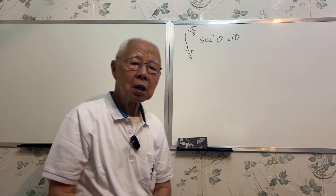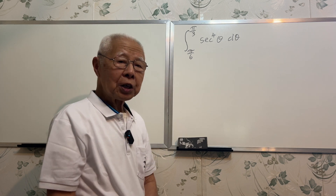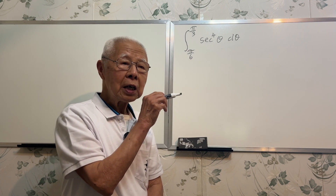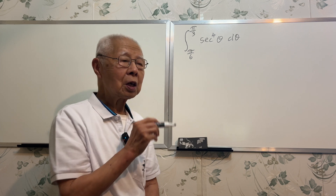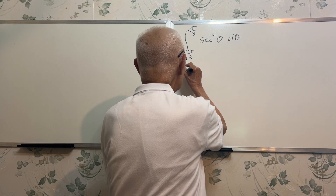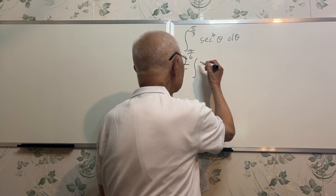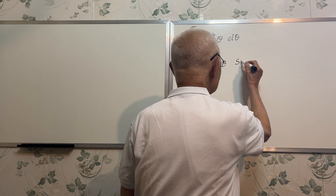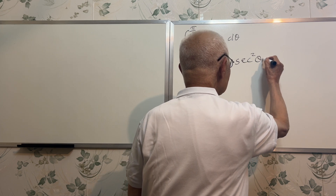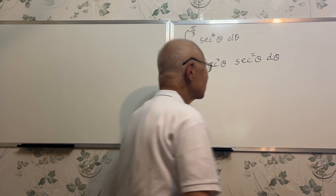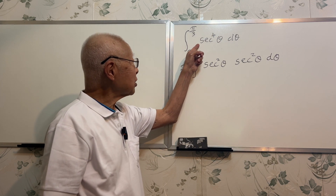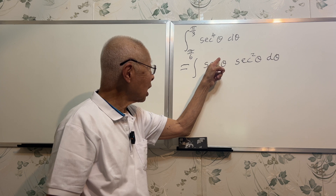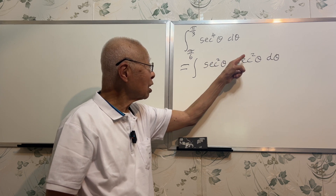So this question looks very difficult, but there is a trick. You split the power 4 into power 2 and also a power 2. We rewrite secant theta to the power 4 into secant theta squared times secant theta squared.